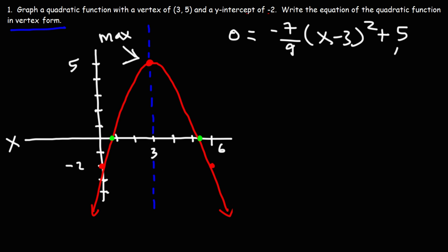So the first thing I need to do is move the 5 from the right side to the left side. It's positive 5 on the right, but it will be negative 5 on the left. Now I want to get rid of this fraction and the negative sign. So I'm going to multiply both sides by negative 9. So these two negatives will cancel and 9 divided by 9 will cancel. Negative 9 times negative 5 is positive 45. So we have 45 = 7(x - 3)².